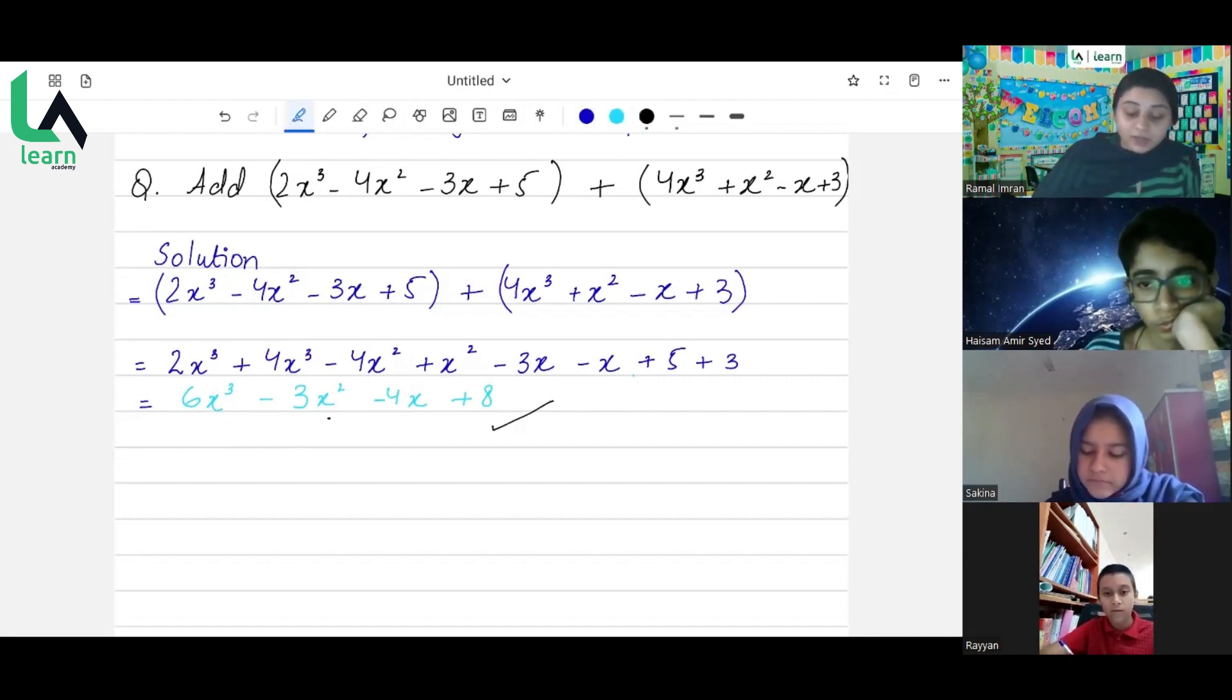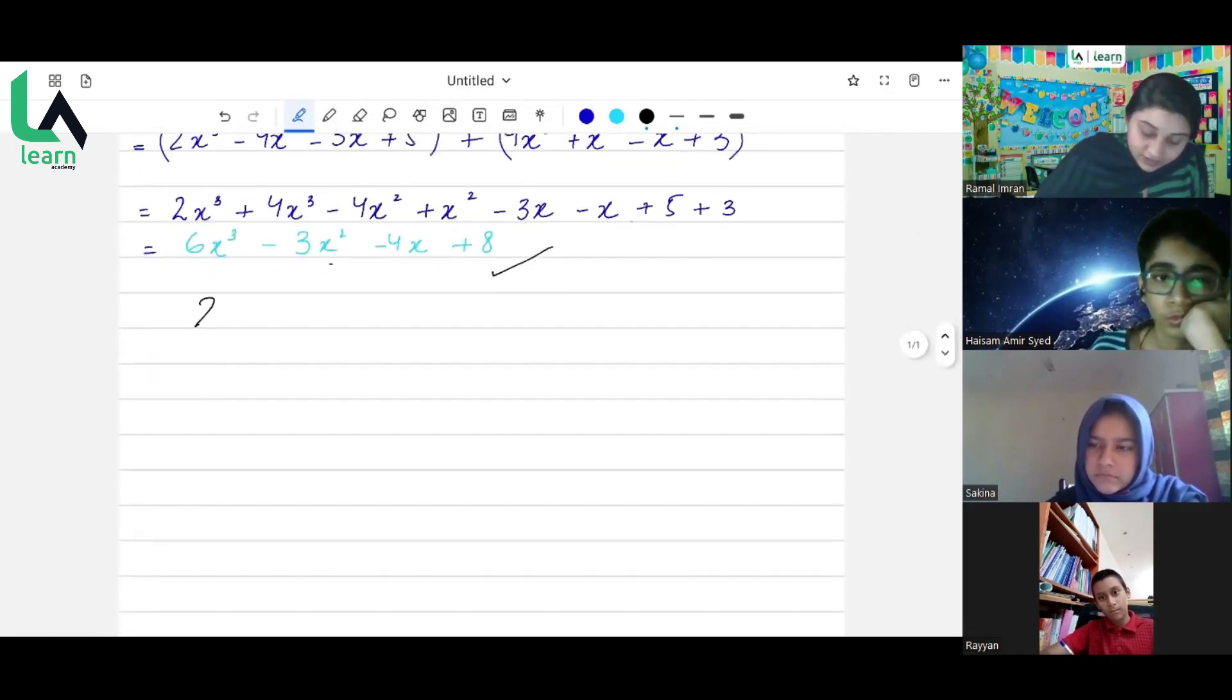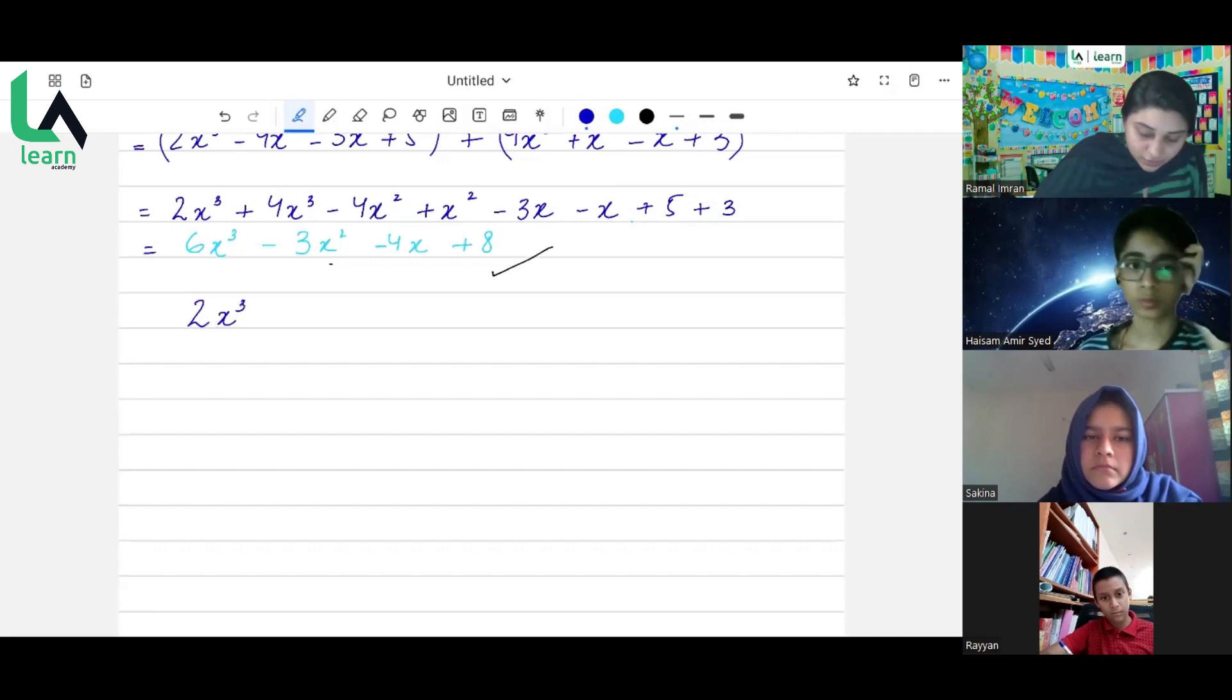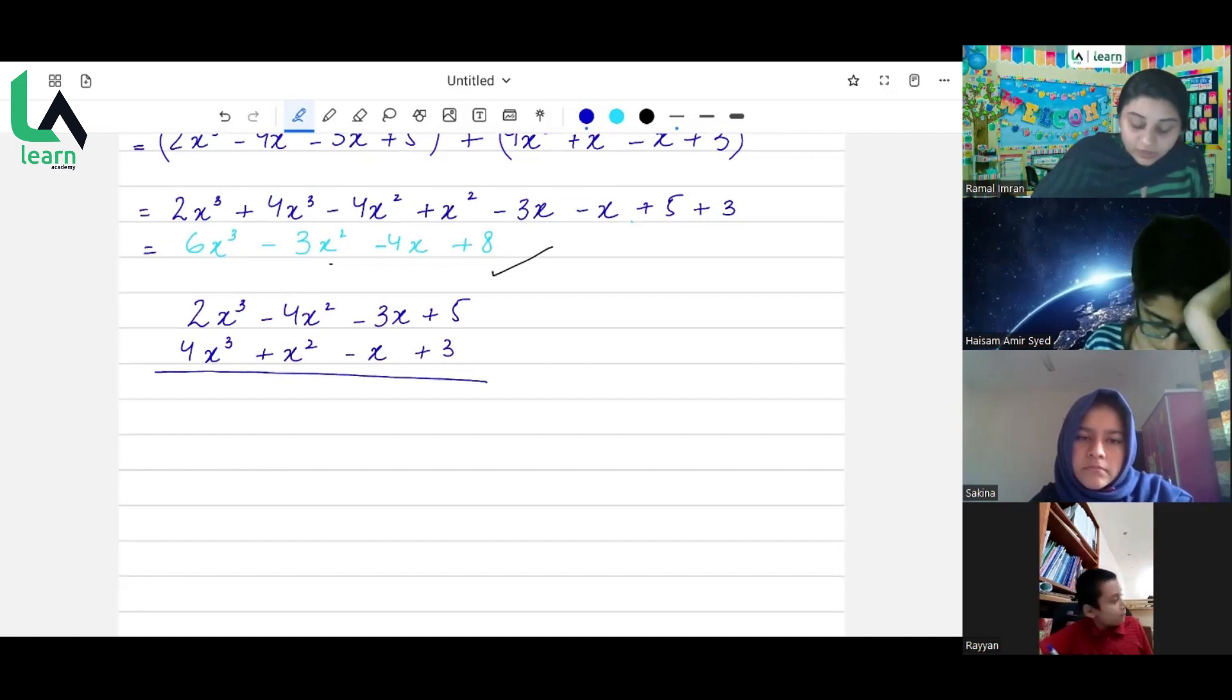Okay. One more thing. One of our students, Umar, did this question vertically. Just like I wrote it horizontally, he must have written the same question like this. Just like we used to do when we were in our primary classes. So he wrote it like this: 2x cubed, then we have minus 4x, then we have minus 3x and plus 5, and what he did in the next expressions, he started writing it like this. So both the ways are correct. You can write it either in this way or in that way. Both of them are correct. Now you can add them or subtract them, whatever the question requires and your answer will come same. Ok?